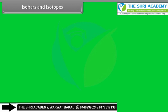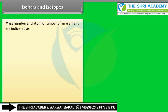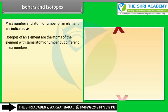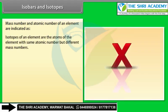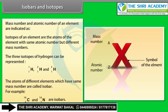Isobars and isotopes: Isotopes of an element are atoms with the same atomic number but different mass numbers — for example, the three isotopes of hydrogen. Isobars are atoms of different elements that have the same mass number.